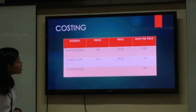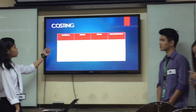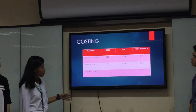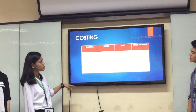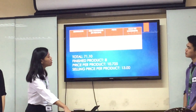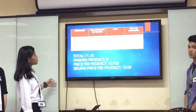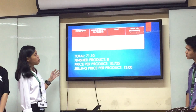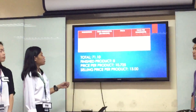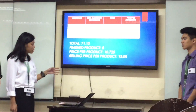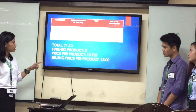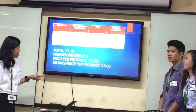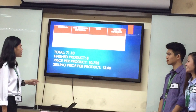For costing, the materials are plastic spoons for 50 pesos and plastic cups for 80 pesos, and cooking gas at 1 peso per piece. The ingredients — membrane, milk, gelatin, and coffee — cost 24 pesos, 54 pesos, and 40 pesos respectively, with a total cost of 71 pesos yielding 8 finished products, at a unit cost of 10.725 pesos and a selling price of 13 pesos.